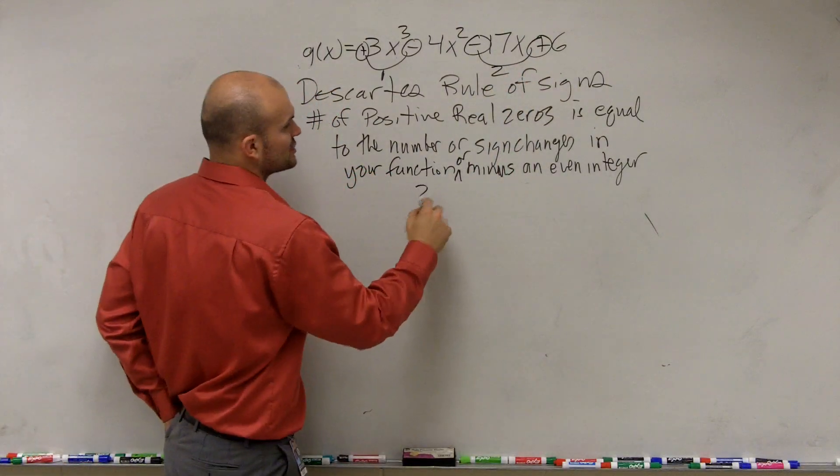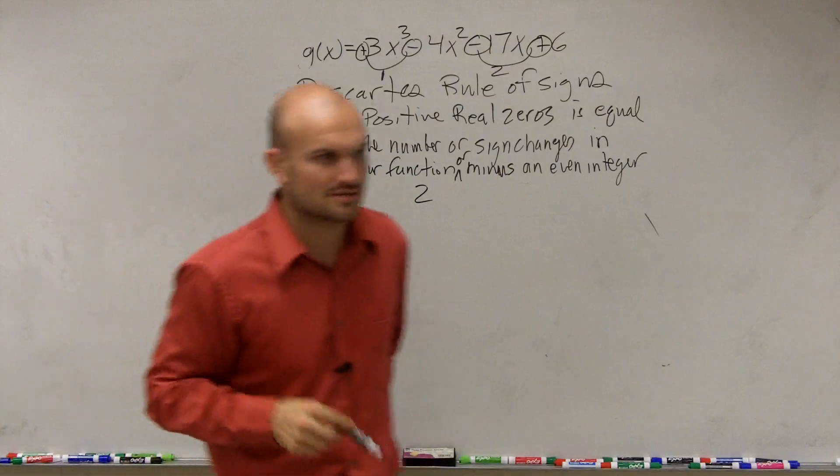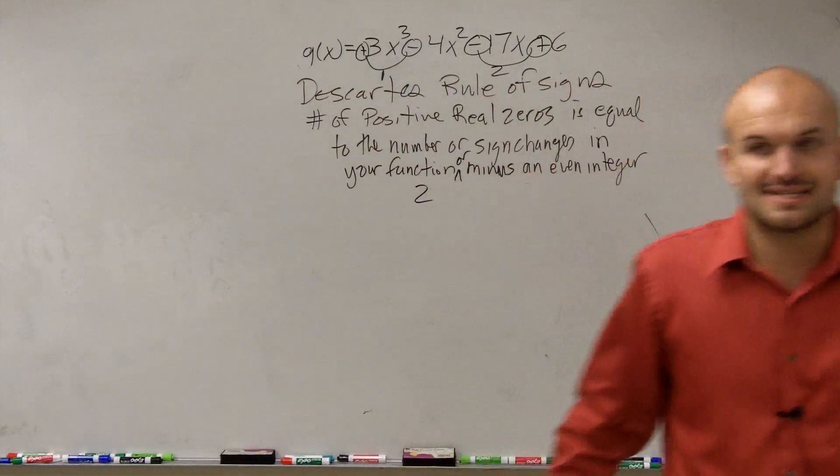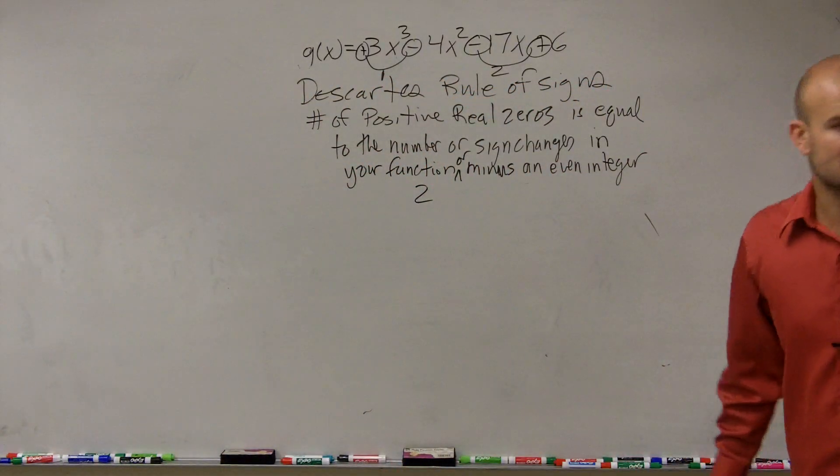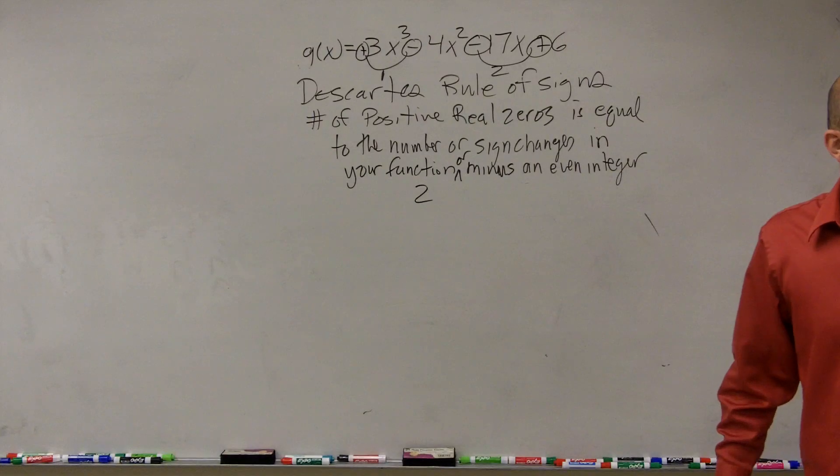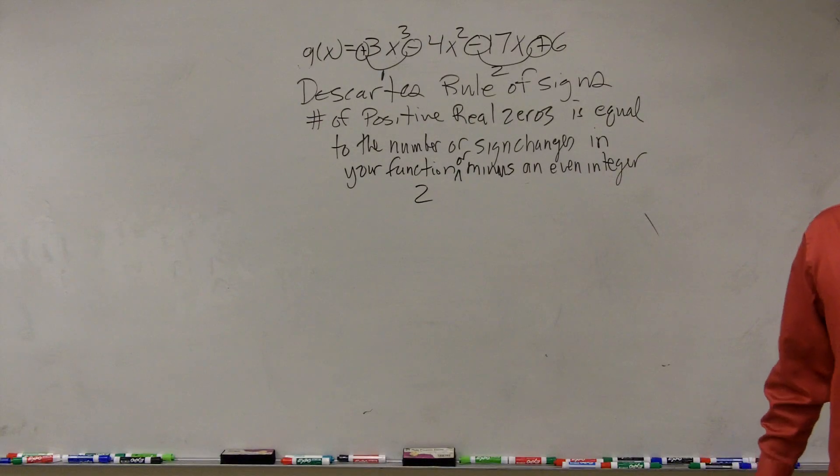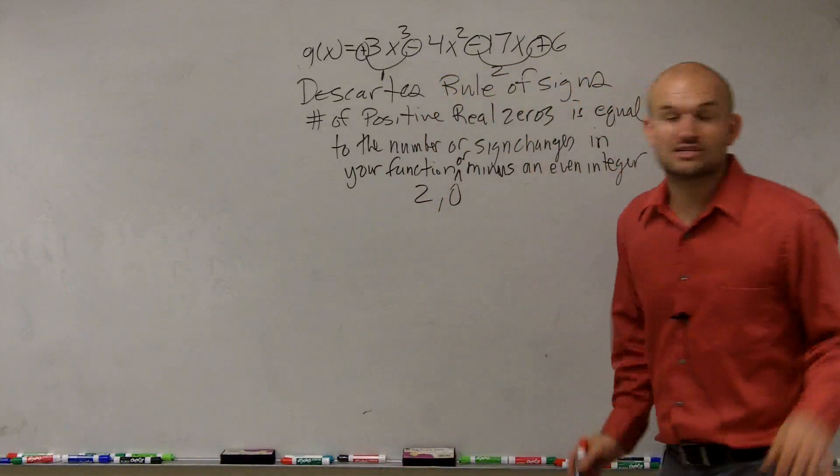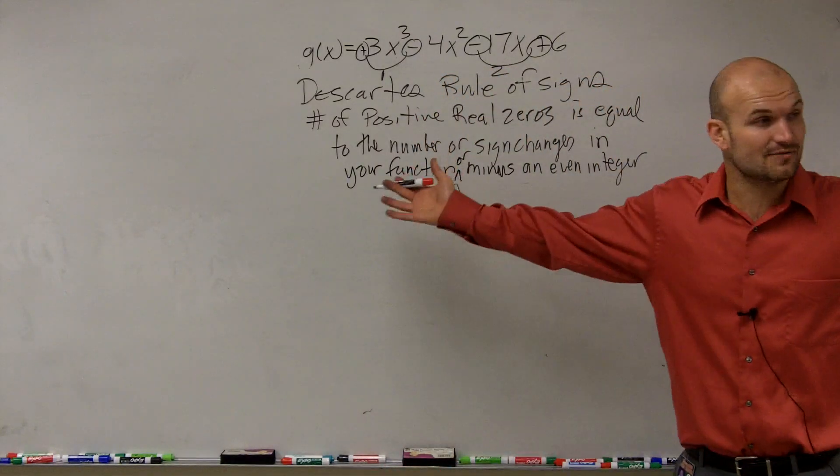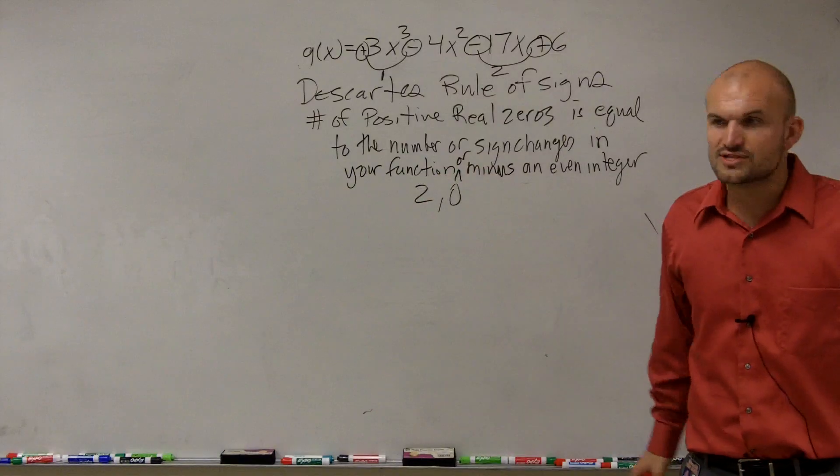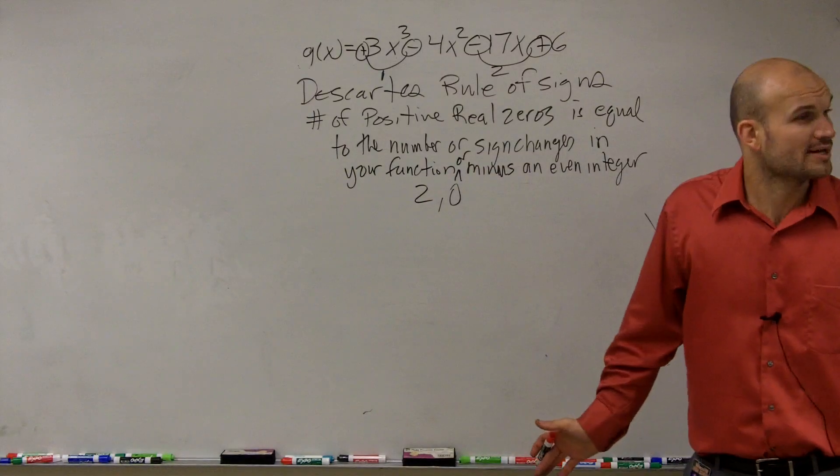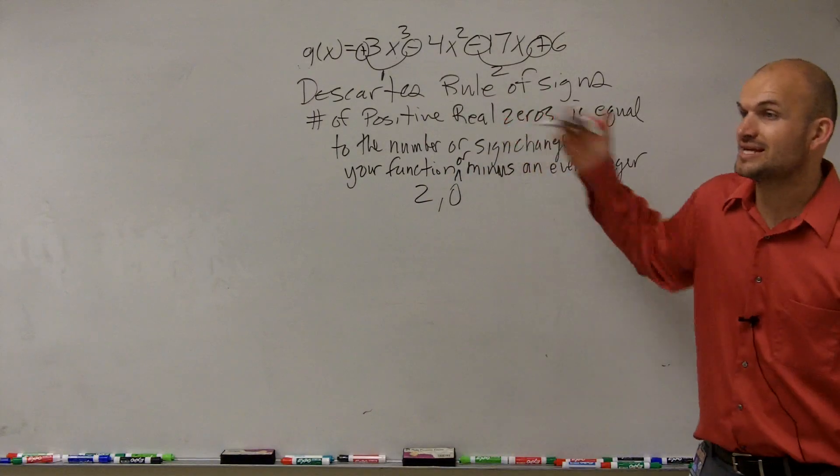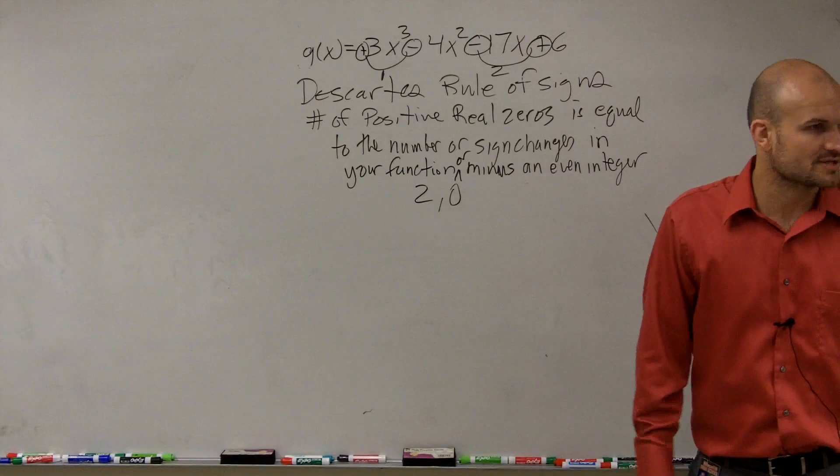So we could say there's two positive zeros or minus an even number, which the smallest even number is two, right? So two minus two is zero. So that means there's either two positive real zeros or there's none. We don't know which one yet. But we know that by this test, we're not going to have one real zero.